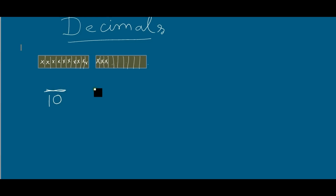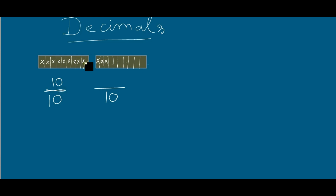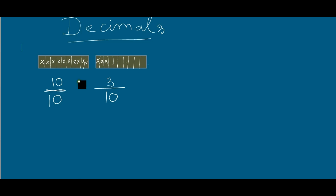I can also write ten as the denominator for this box, because I have divided this box into ten equal parts. As I have crossed all ten parts of this box, the numerator will be ten — that means I have taken all ten small boxes from this big box. And since I have only crossed three small boxes in this big box, the numerator here will be three.